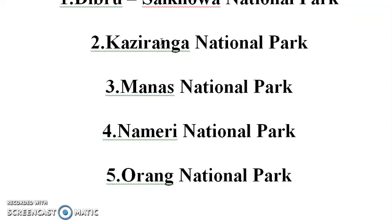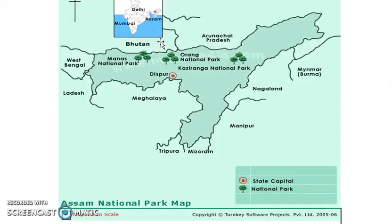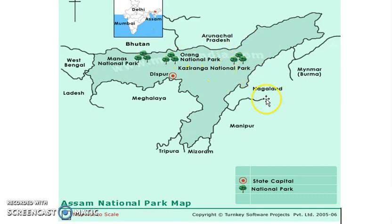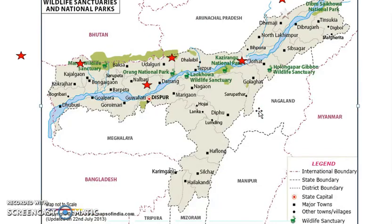Friends, you will find the first map of Assam here. Manas National Park is the next important national park. The second most important national park in Assam is Manas, which is also a World Heritage site.